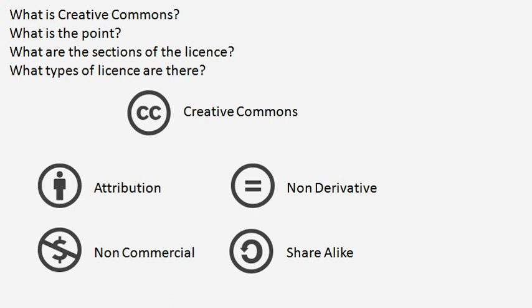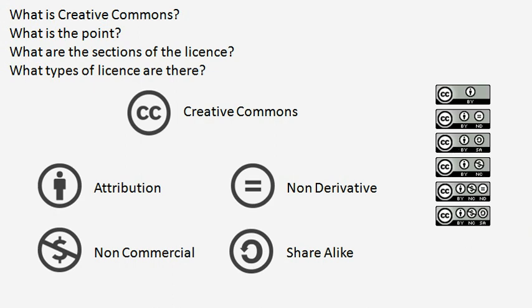So the final part: what types of licences are there? Not all of these work in conjunction with each other — mainly the non-derivative and the share-alike licences, because share-alike explicitly refers to derivative works. So you'll never see a licence with both of these. Here are the licences that exist. The first one is attribution only: a user can make derivatives, they don't have to share with the same licence, and they can use it for commercial uses.